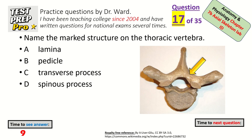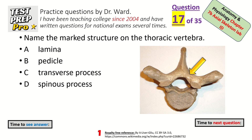Name the marked structure on the thoracic vertebra — it's pointing to the posterior lateral portion, just lateral to where the spinal cord would be, posterior lateral to it. The lamina.